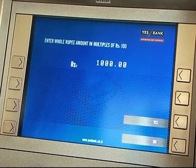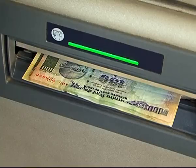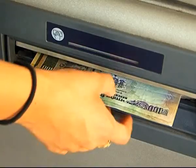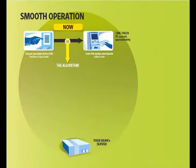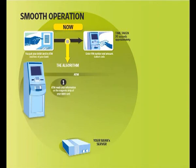Algorithm is a simple set of rules in the software, and this is how it works. An ATM transaction follows a series of steps, starting with the ATM reading the information on the magnetic strip of your debit card, then sending that information to your bank's server.